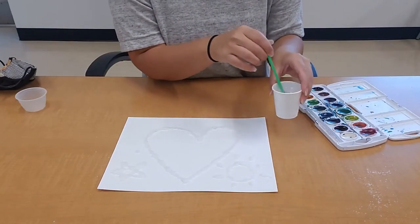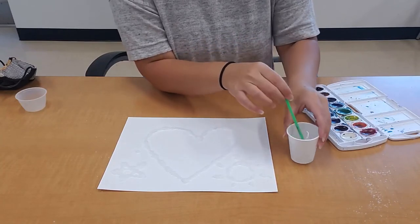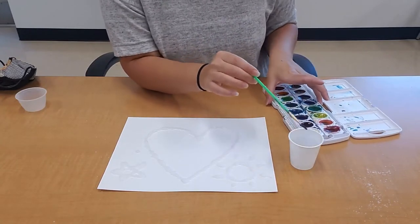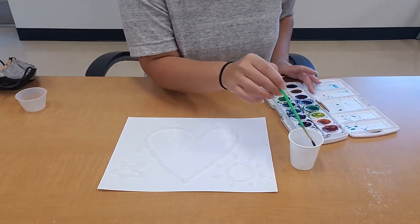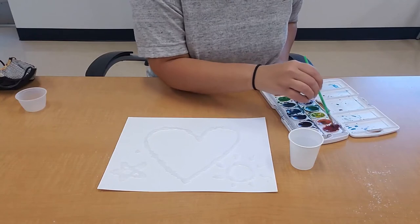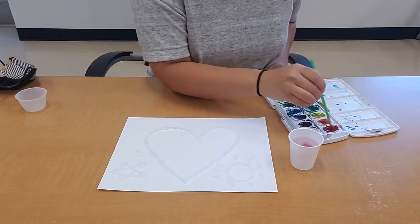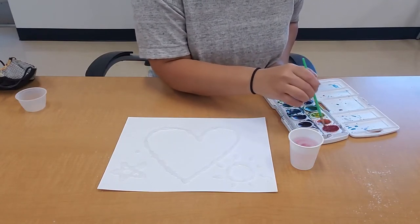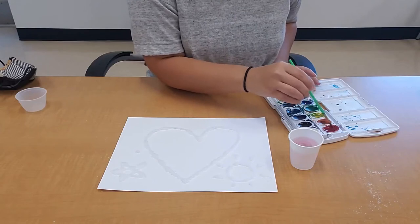The trick is to have a lot of water and to really saturate your paintbrush with some color. Dip in water, then into the paint, dip it into water again, just so that I get a very watery color.